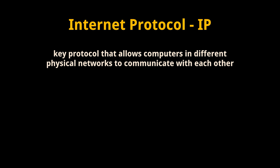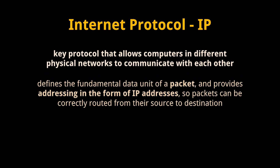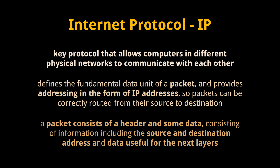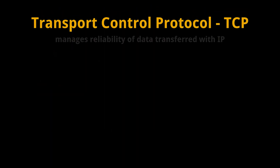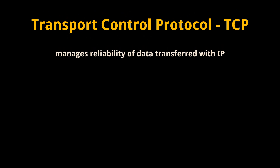IP is defined in the internet layer of the TCP/IP model and corresponds to approximately layer 3 of the OSI model. IP defines and works with the fundamental data unit of a packet. It also provides addressing in the form of IP addresses so packets can be correctly routed from their source to destination. An IP packet consists of a header and some data. The IP header contains information including the source and destination address, and the data is formatted for the next layers.